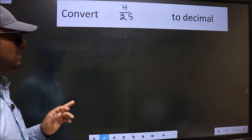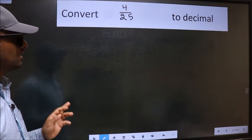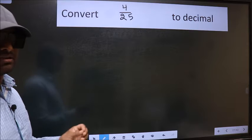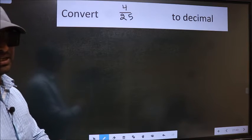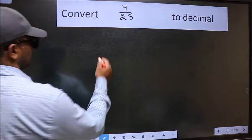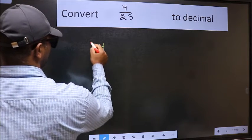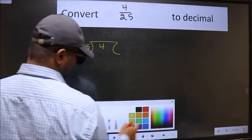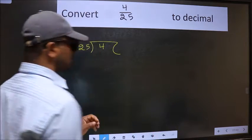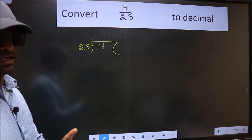Convert 4 by 25 to decimal. To convert to decimal we should divide it. To divide it we should frame it in this way: 4 here and 25 here. This is your step 1.